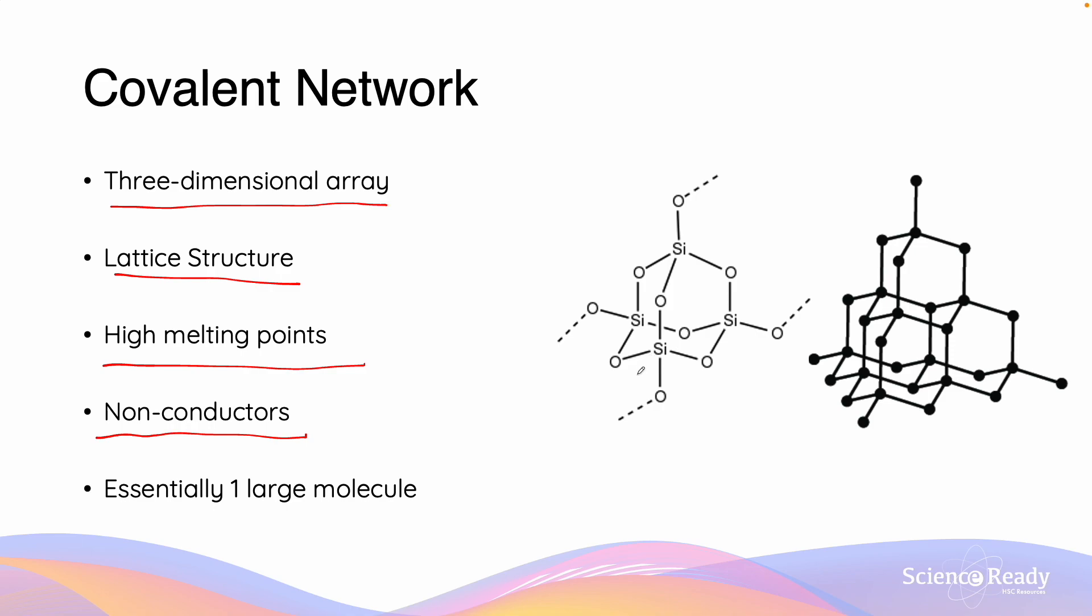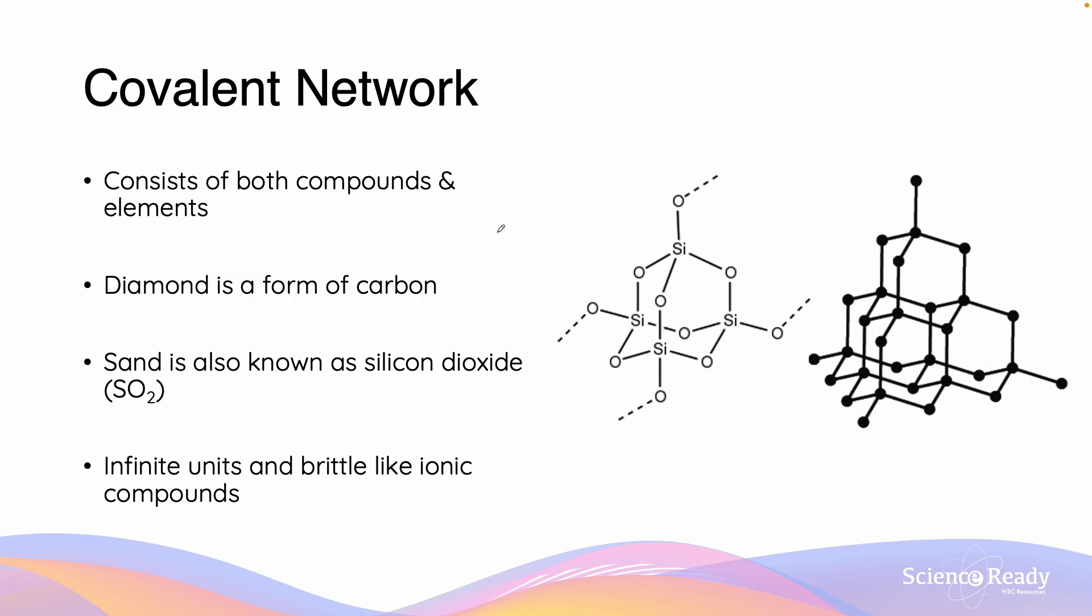The same as it was with the ionic substance, the lattice structure means that these covalent networks are essentially just one large molecule. So covalent networks, as we said earlier, like with covalent molecular, they are only compounds if there are two or more substances. If it's just an element, then it's not going to be a compound.